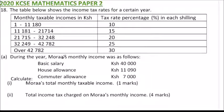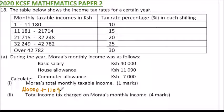Part A: During the year, Moran's monthly income was as follows — basic salary of 40,000 shillings, house allowance of 11,090 shillings, and commuter allowance of 7,000 shillings. Calculate Moran's total monthly taxable income. The taxable income is the sum: 40,000 + 11,090 + 7,000 = 58,090 shillings.